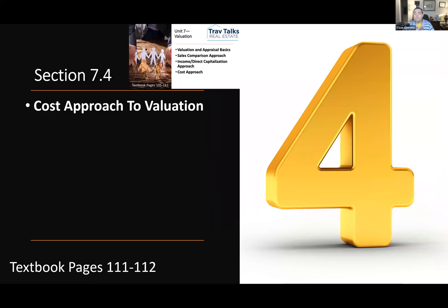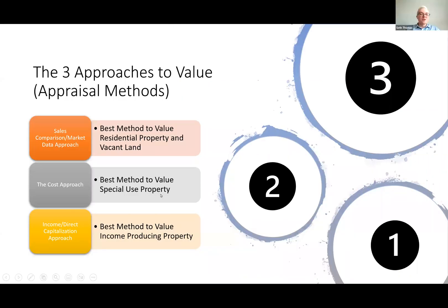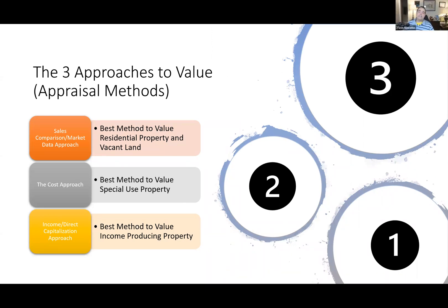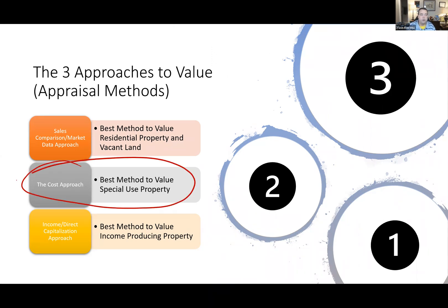7.4 is the last approach to value — we told you there were three — and this one is called the cost approach. Honestly, it's the one you're never going to use, and it's the least accurate of all the different ways to value property.